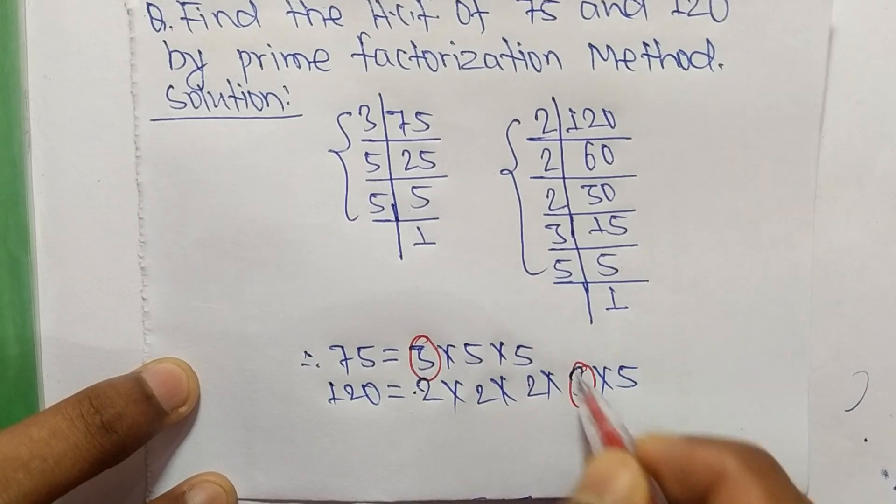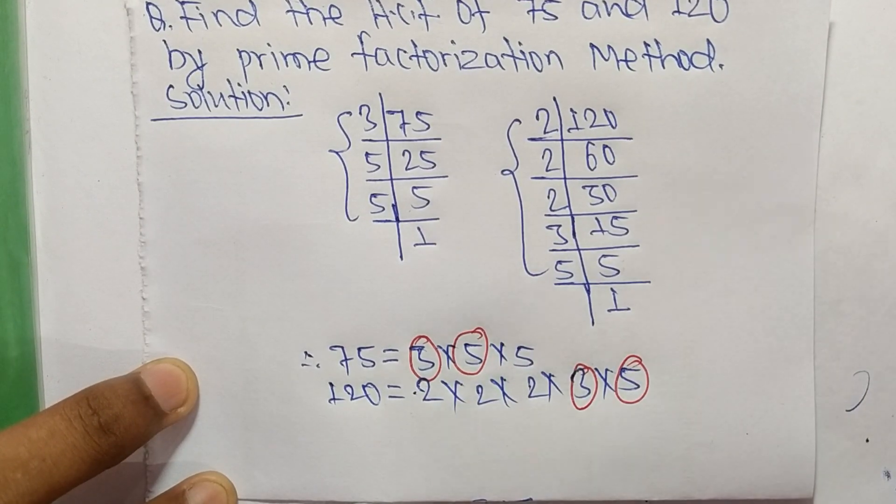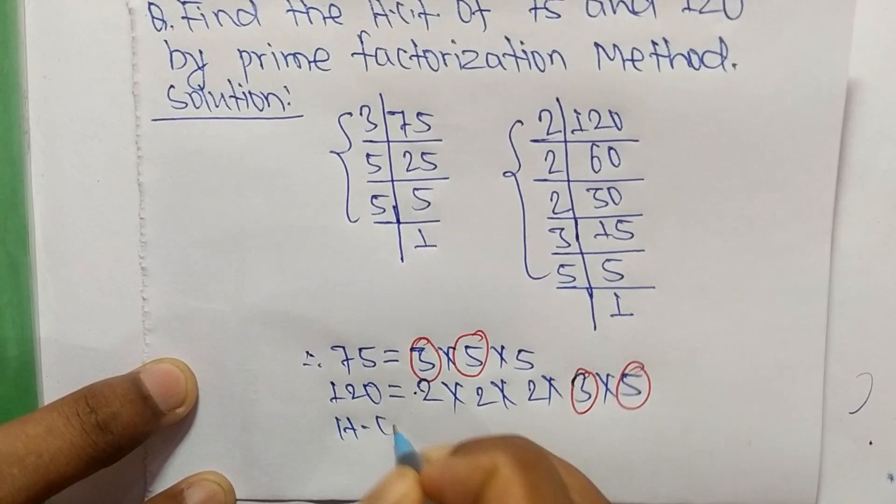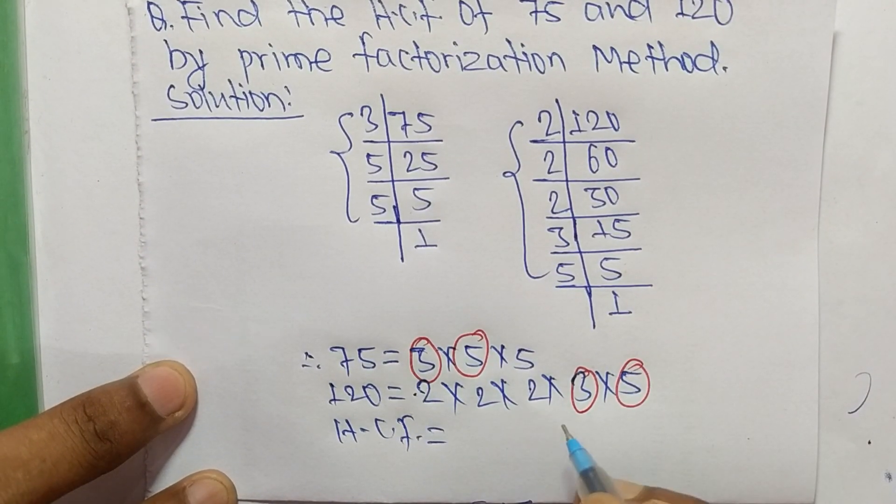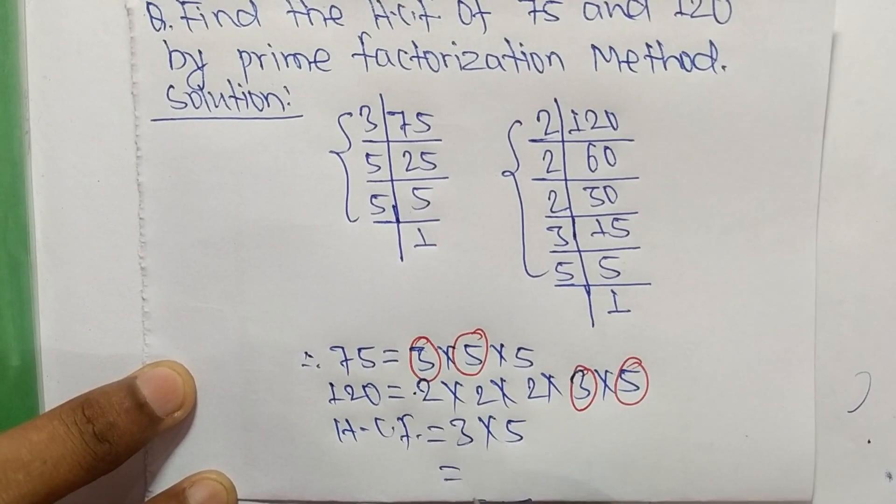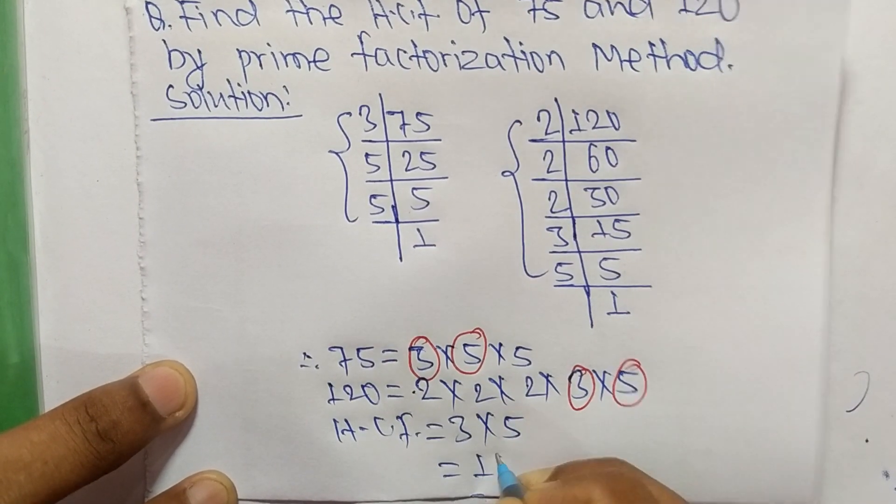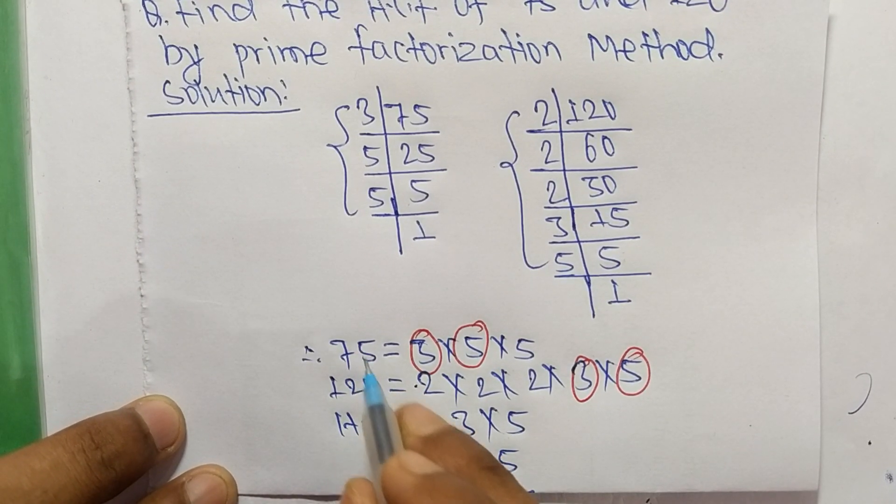The HCF is equal to the product of common factors which are 3 and 5. So 3 times 5 equals 15. So 15 is the HCF of 75 and 120.